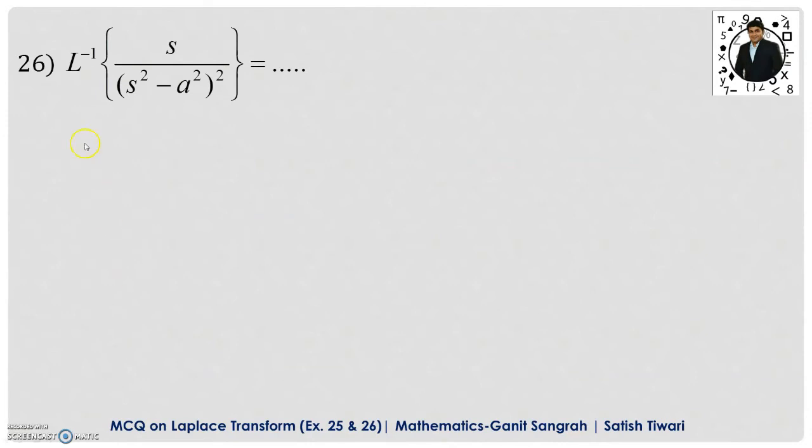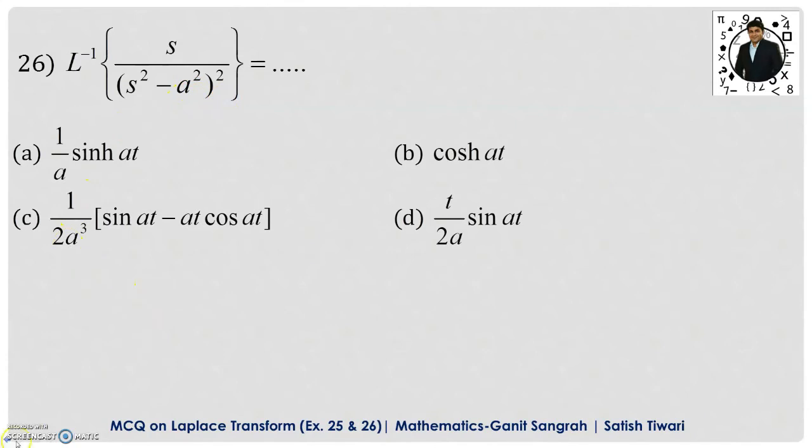Example number 26. It is L inverse of s upon s square minus a square whole square. It is given by. It is the standard formula if you know. You can find out the inverse of this fraction by using the partial fraction method or maybe by the convolution theorem and option d is correct here that is t upon 2a sin at.